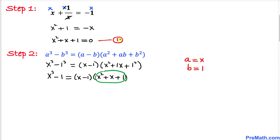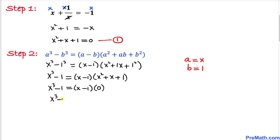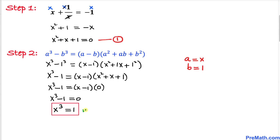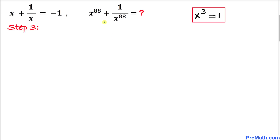We can see that the factor x squared plus x plus 1 equals 0, from our equation 1. So I'm going to replace it by 0. Therefore x cubed minus 1 equals x minus 1 times 0, which is 0. So x cubed minus 1 equals 0, meaning x cubed equals 1.